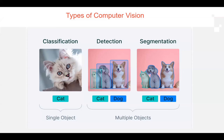There are three main types of computer vision models. First, classification — we classify an object in an image, such as identifying it as a cat, or classifying a human as male or female. Second, detection — detecting whether something is present, such as detecting someone walking into an unauthorized area. Third, segmentation — we segment different things in an image. For example, a model can segment two cats and one dog within a single image, distinguishing between each individual object, whereas detection may struggle when multiple instances of the same class appear.